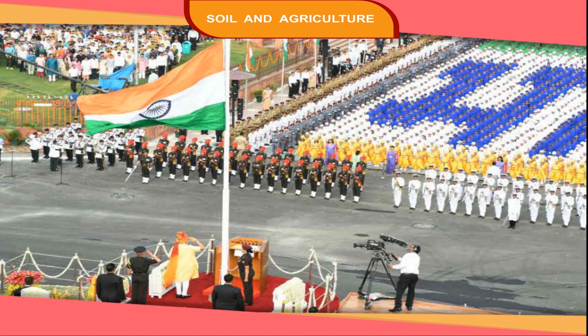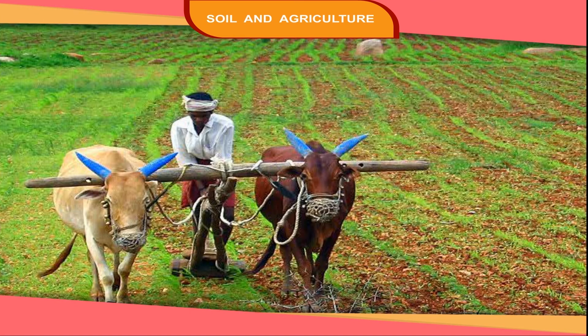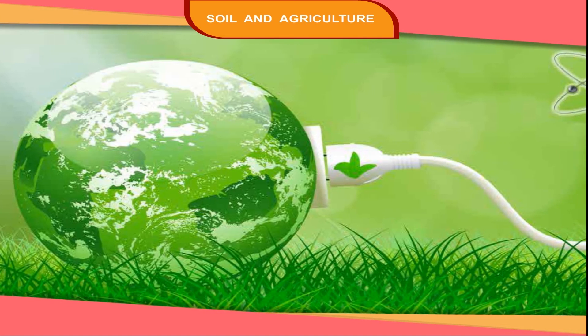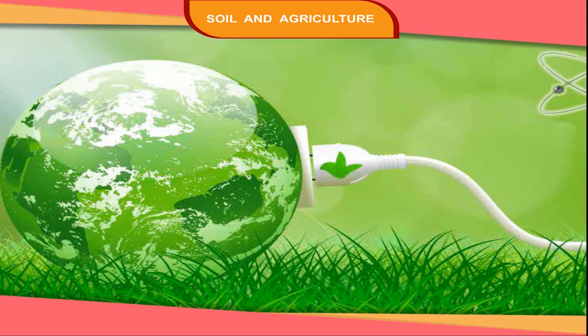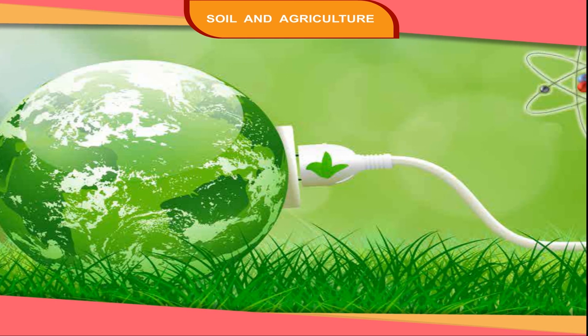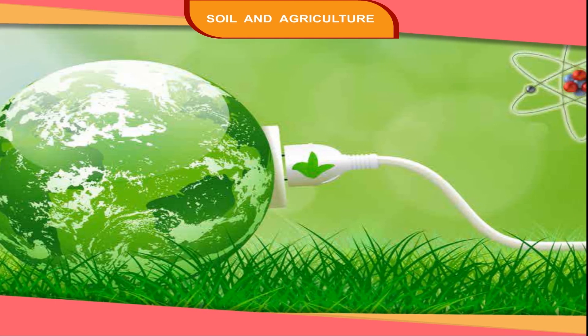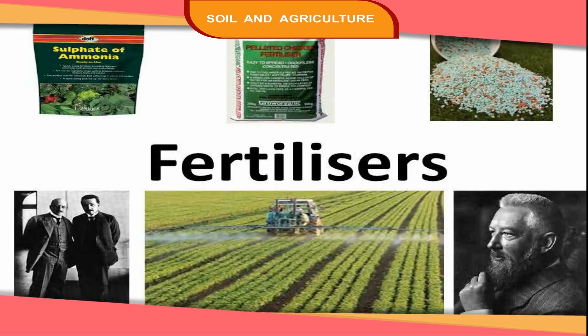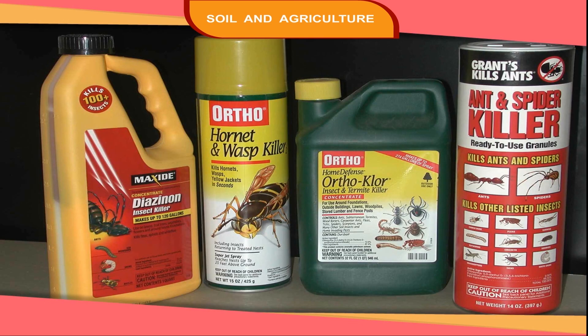Green Revolution: After independence, our country has made a great revolution in the production of crops. This great revolution is called the Green Revolution. This has been possible because of irrigation facilities, fertilizers and pesticides.